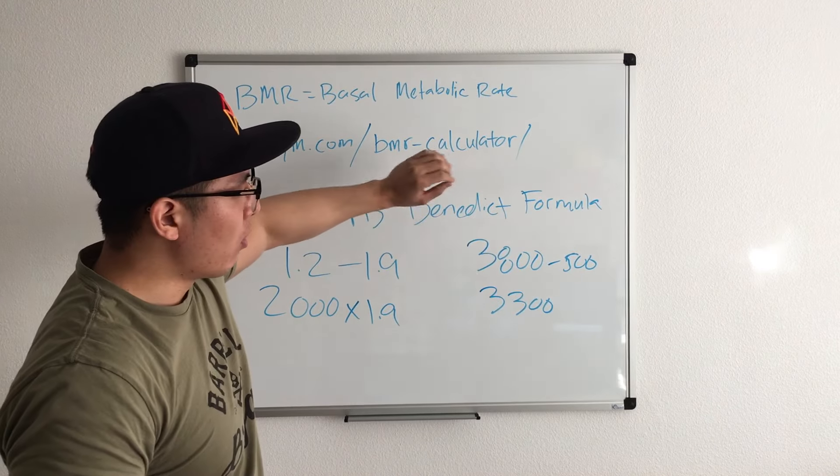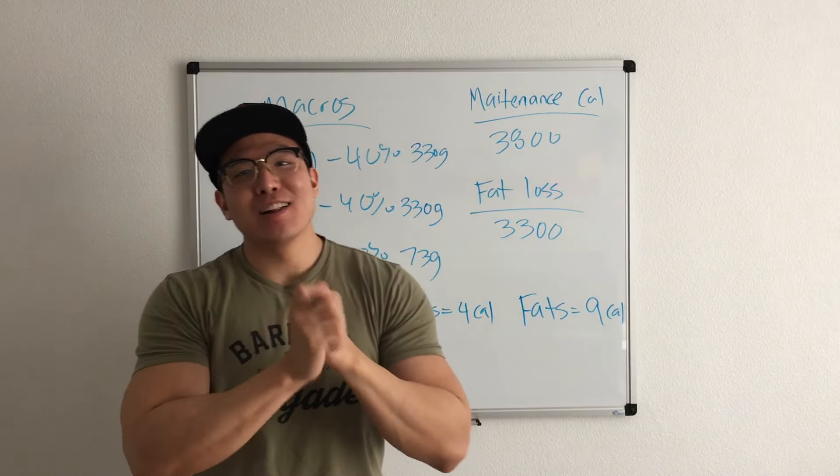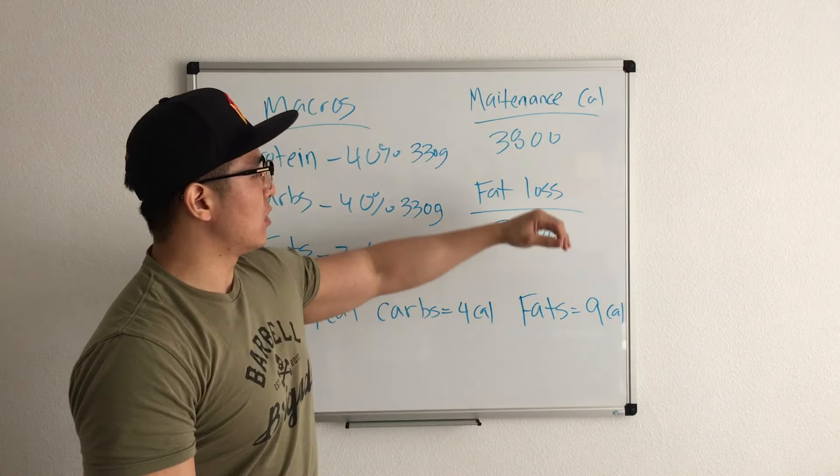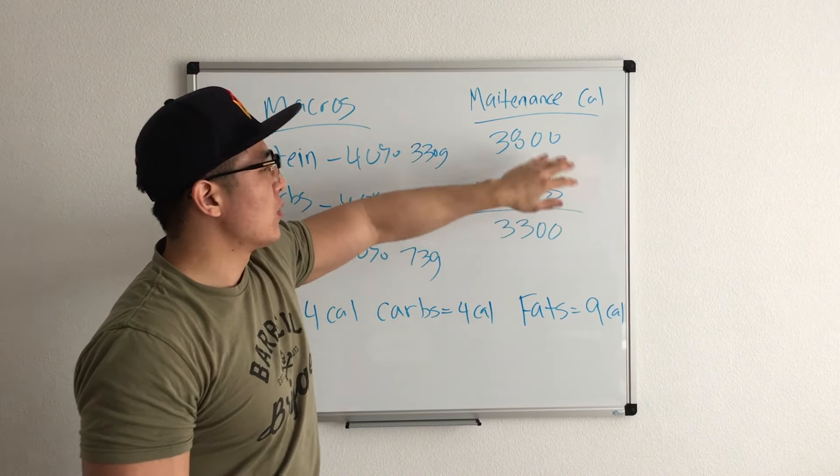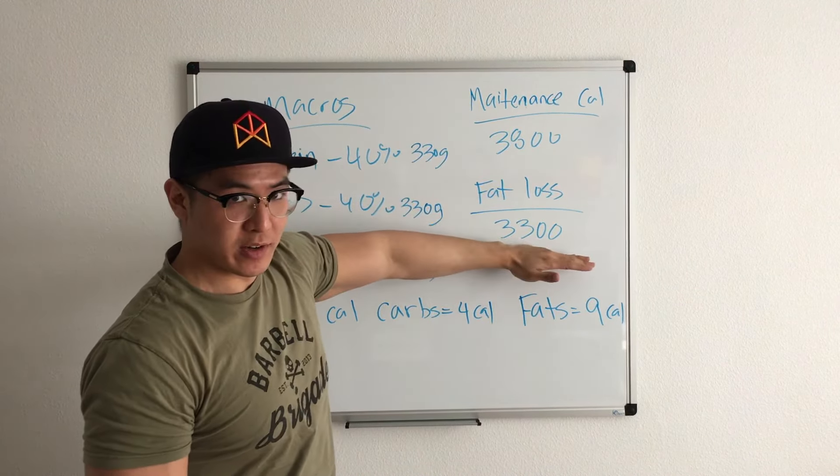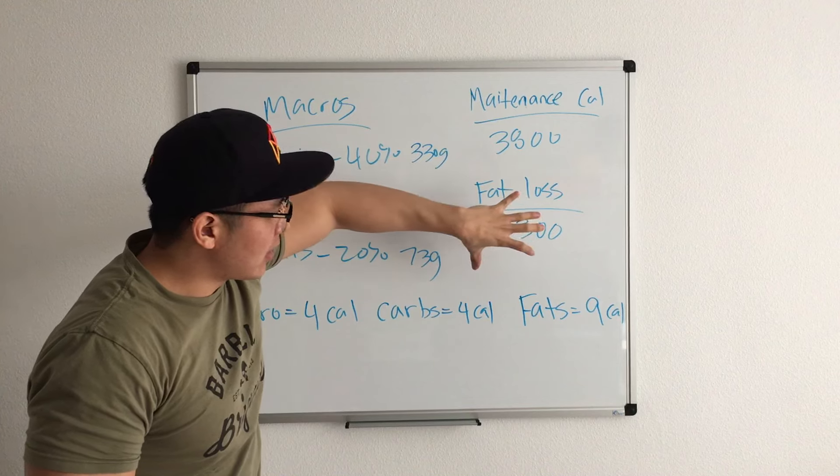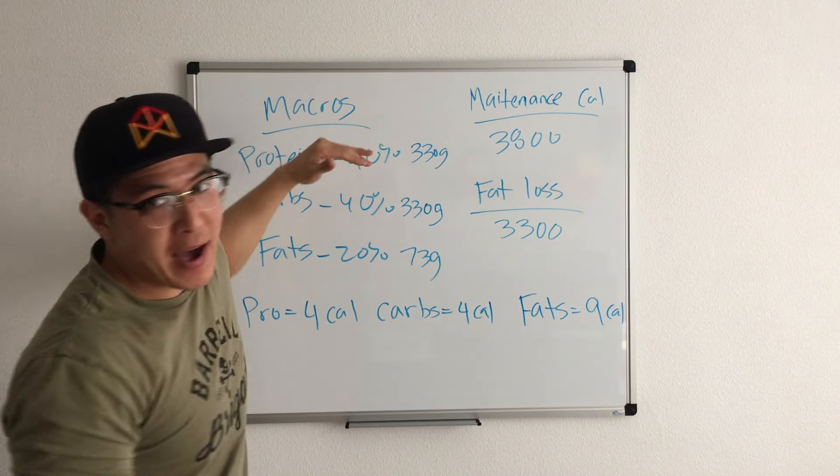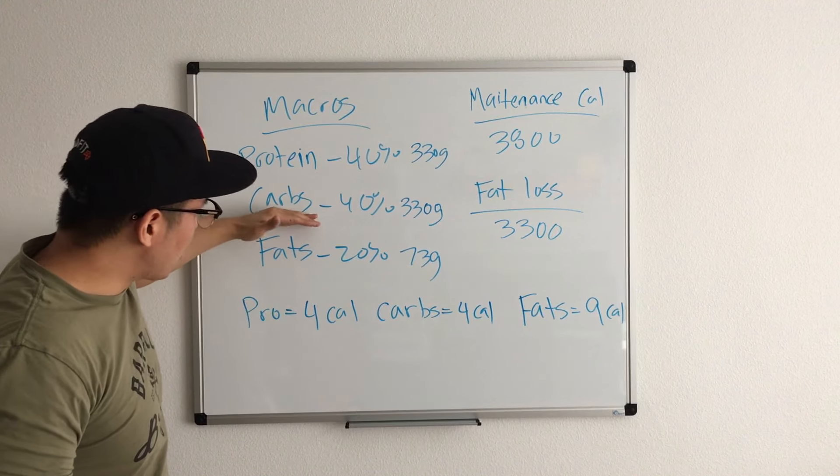That's the basic on how to figure out your calorie needs for muscle growth or for weight loss or just for maintenance. Now we got all of that out of the way, we're gonna dive into the fun stuff. We're gonna use the numbers I used before. So this individual, for example, his maintenance calories is 3,800. For fat loss, I minus 500 from the 3,800 to get his fat loss numbers, which is 3,300.